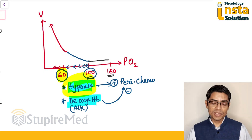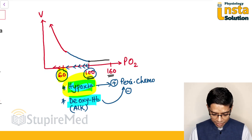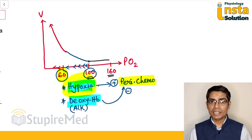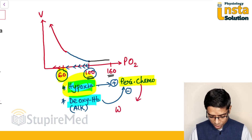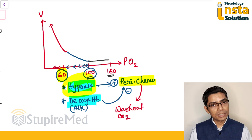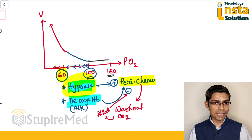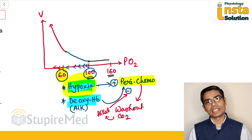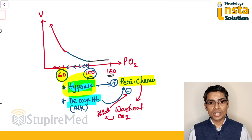Apart from deoxyhemoglobin-mediated inhibition, there is another reason. Whenever hypoxia stimulates peripheral chemoreceptors, ventilation rises — and rising ventilation washes out carbon dioxide from the body. Washing out CO₂ causes alkalosis, and this alkalosis inhibits ventilation. So this inhibition is ongoing as hypoxia grows. But whenever hypoxia drives PO₂ below 60 mmHg, the stimulation to ventilation is so strong that this inhibitory effect becomes negligible.